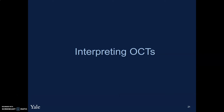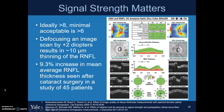Now we're going to talk about interpreting OCT scans. One of the most important things to look at is signal strength. Ideally on a Cirrus device, signal strength is at least eight; minimally acceptable is around six. It's very important to compare to previous scans to make sure signal strength is comparable. Studies have shown that defocusing an image by about two diopters can result in about a 10 micron thinning on the RNFL that can be misinterpreted as progression. Similarly, a 10% increase in mean average RNFL has been seen after patients undergo cataract surgery.